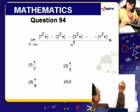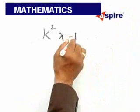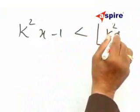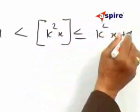Now, we have k²x - 1 is less than the integer function ⌊k²x⌋, which is less than or equal to k²x + 1.